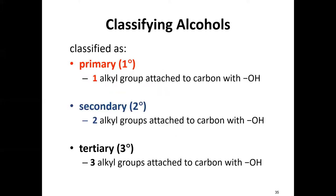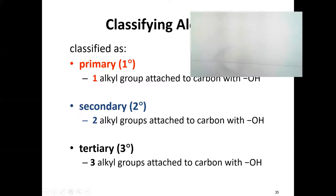Now that we've covered alcohols, thiols, ethers, and phenols, let's discuss how we classify alcohols. Alcohols can be classified as primary, secondary, or tertiary depending on how many carbon groups are attached to the carbon directly bonded to the OH group. Primary has one alkyl group attached to that carbon, secondary has two, and tertiary has three.